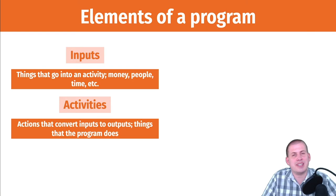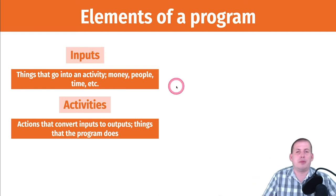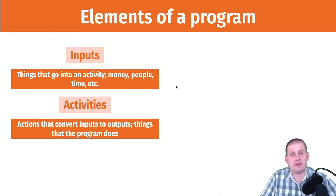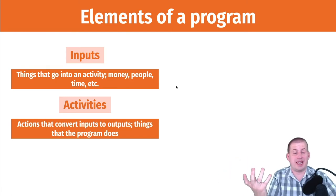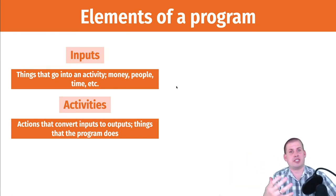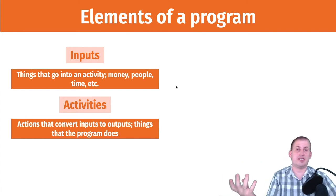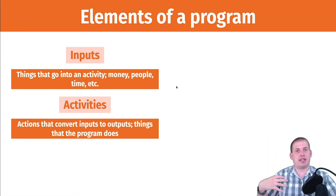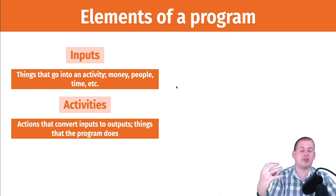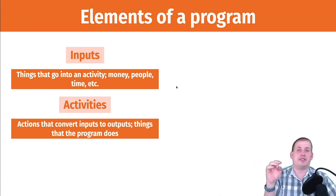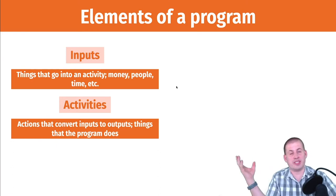The first two elements are inputs and activities. Inputs are things that go into a program — the money you spend, the employees that work on it. If you think of a program like food stamps or SNAP, there are social workers who process applications, congressional and state funding, the actual applications people submit, and a whole bunch of other things that flow into this program.